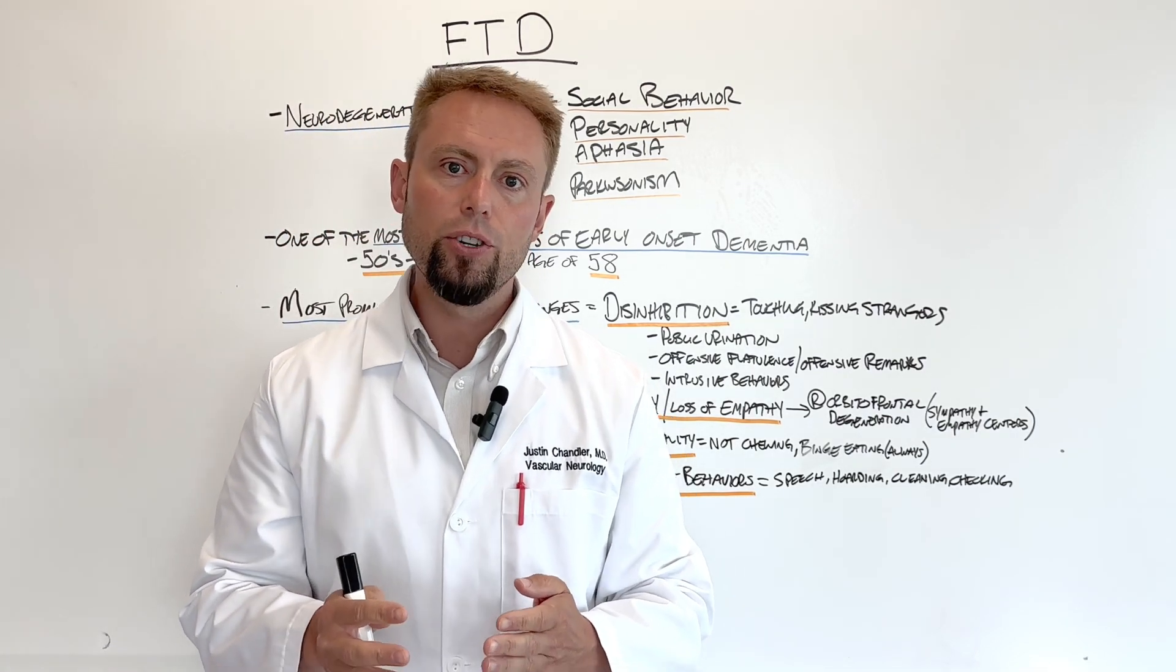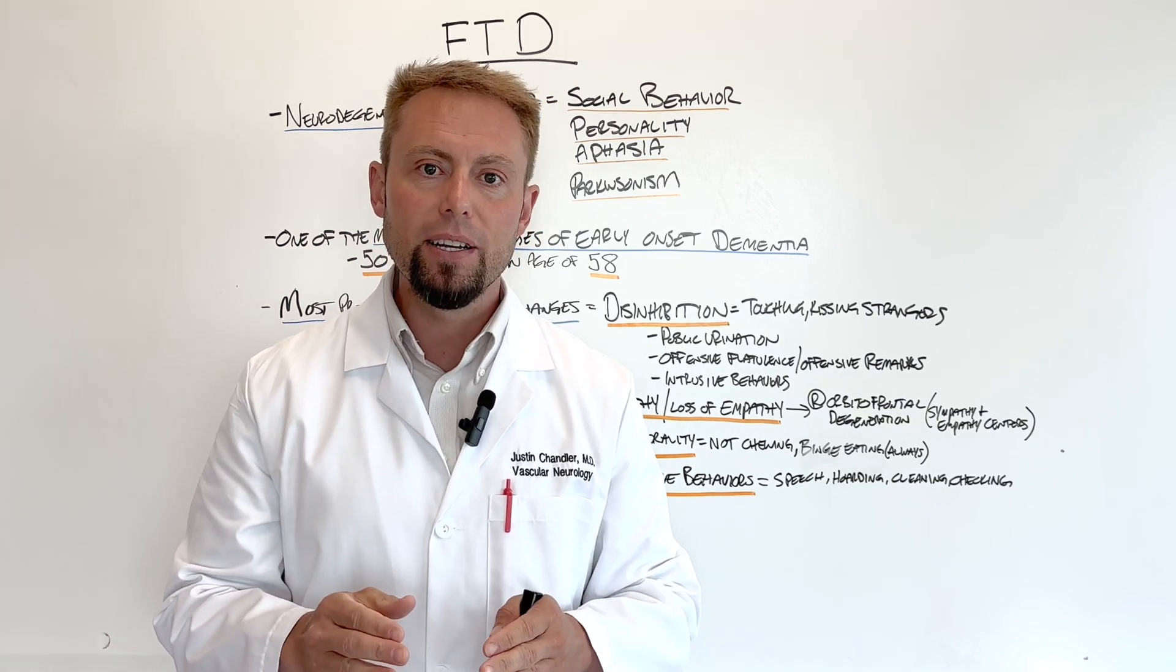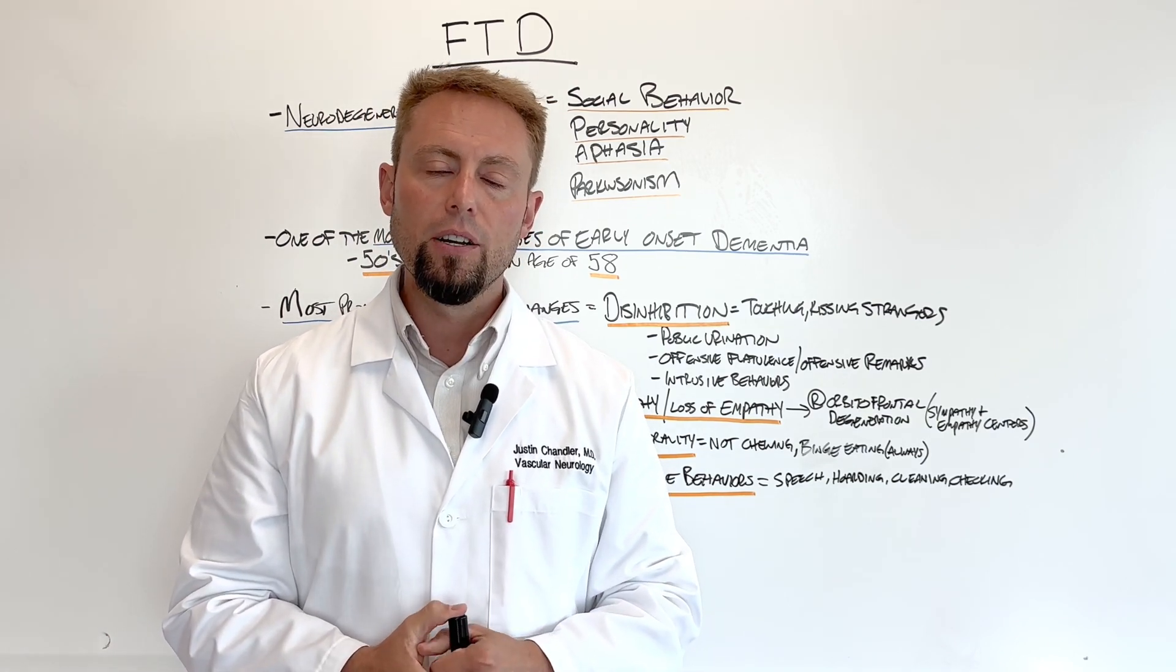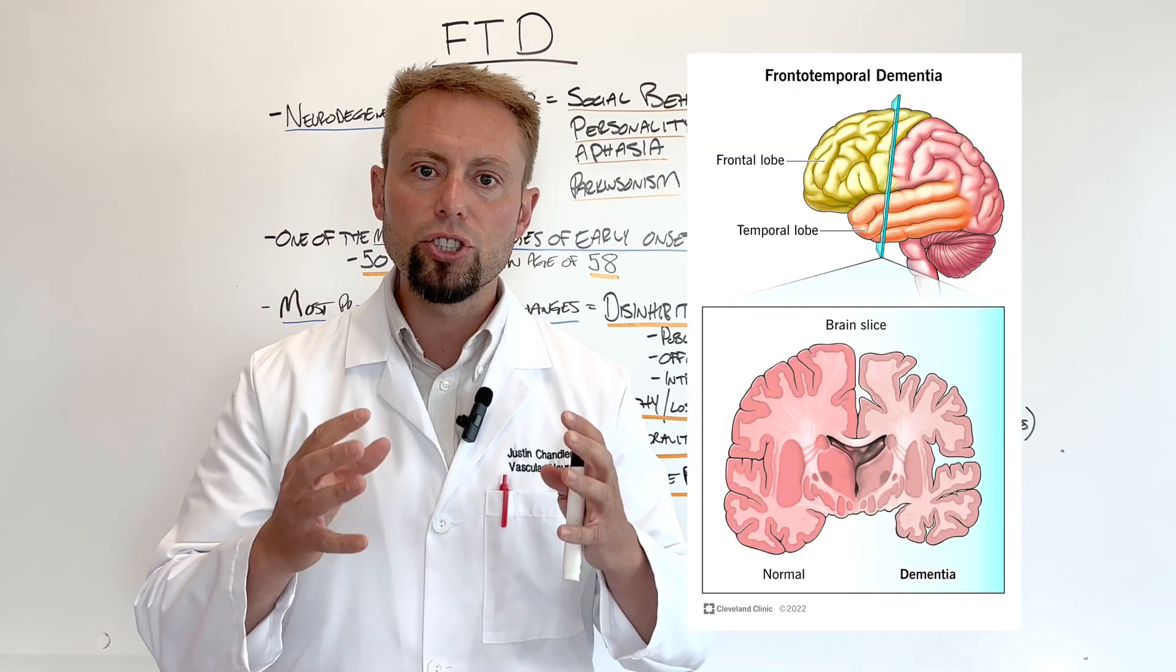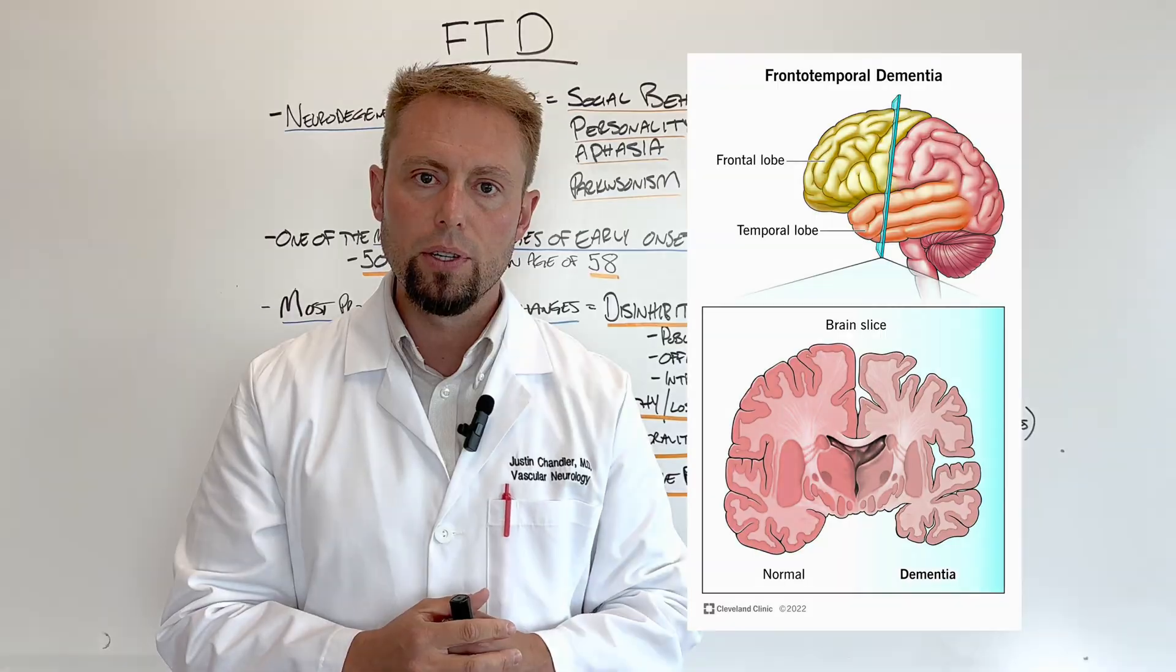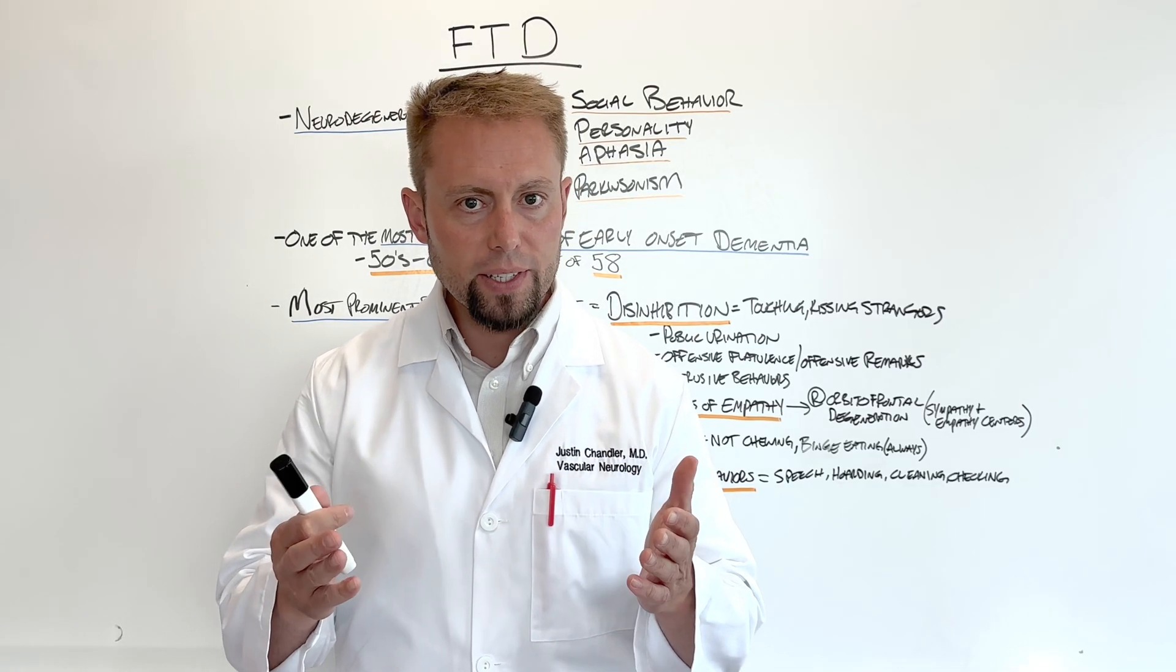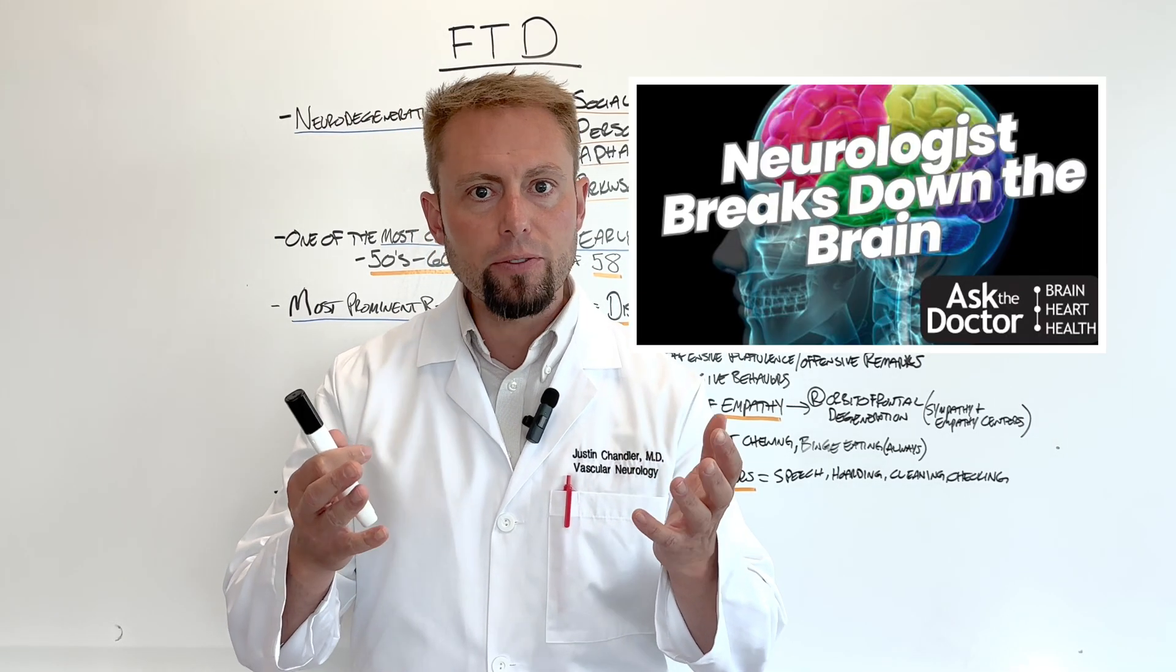You see, the early anatomists and neurologists named this condition correctly: Frontal Temporal Dementia. It's the parts of the brain that shrink or lose their neurons.